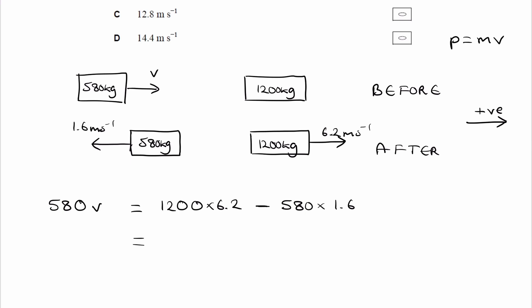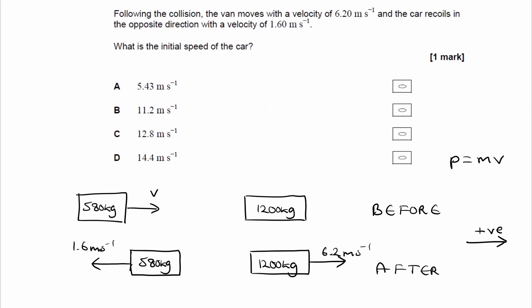So the right hand side gives me 6512. And then we can divide both sides by 580. And we end up with 11.2. So that would be option B.